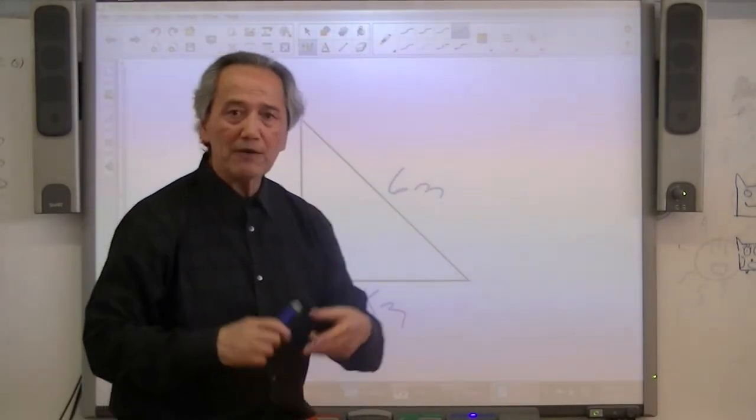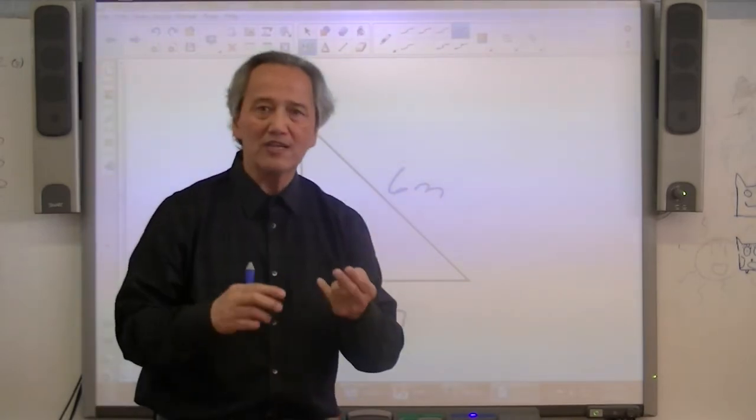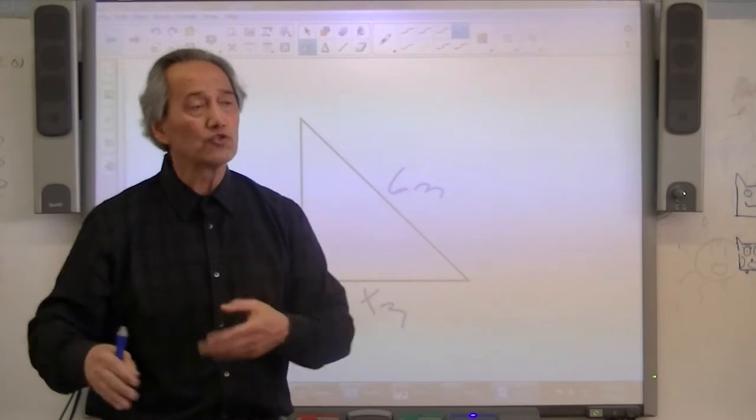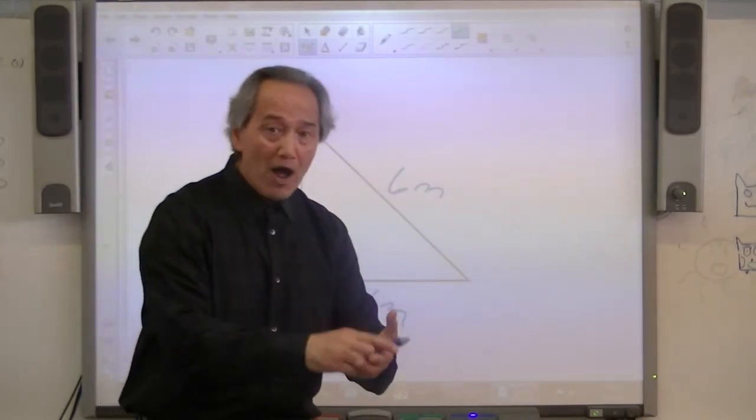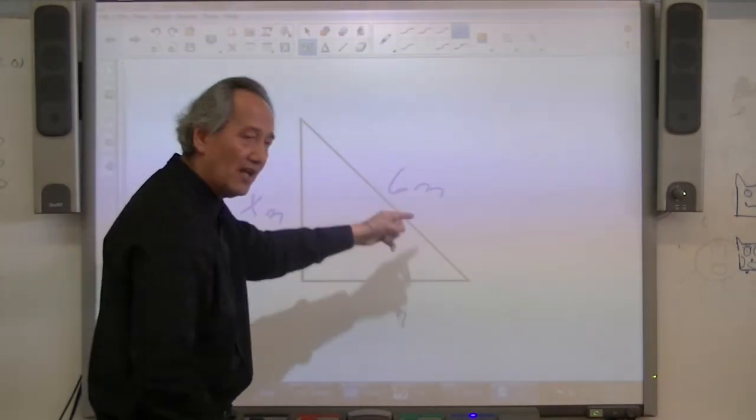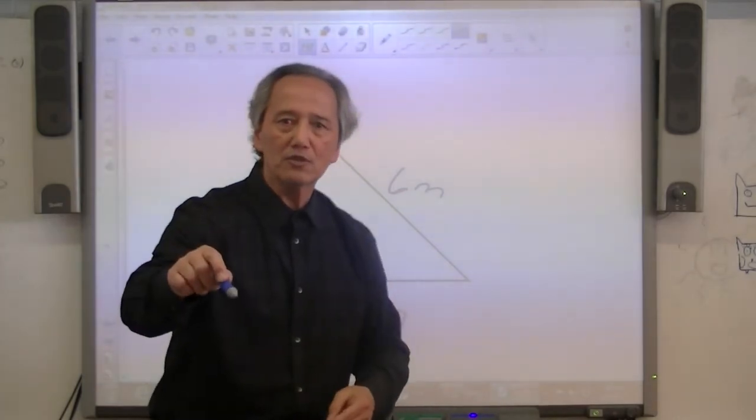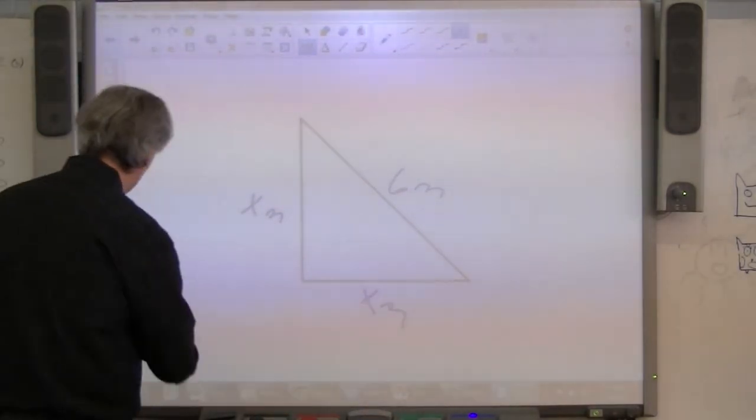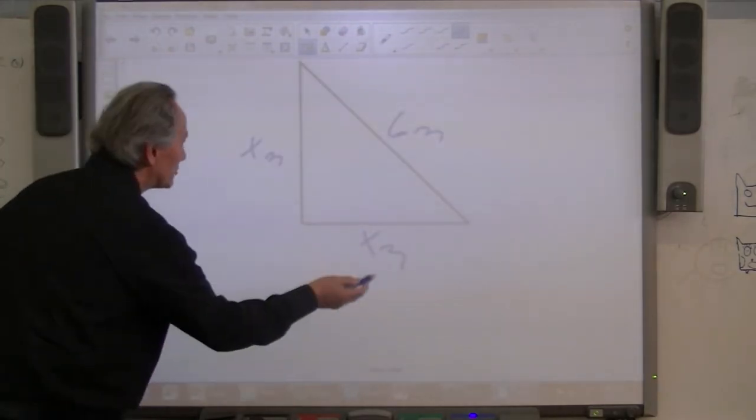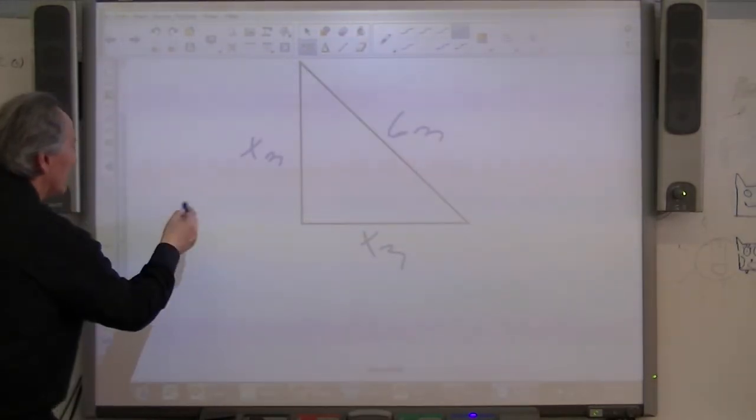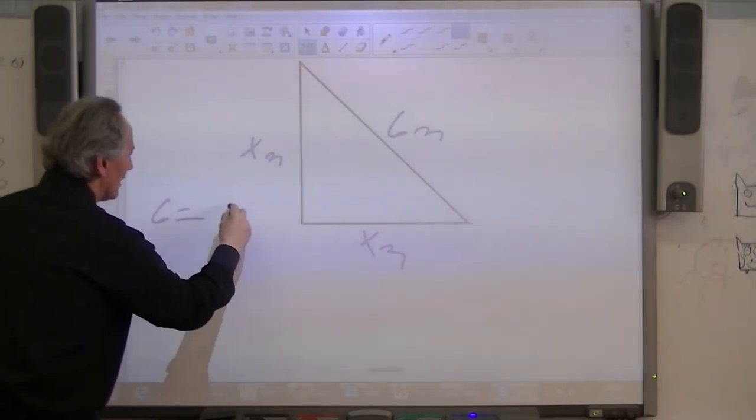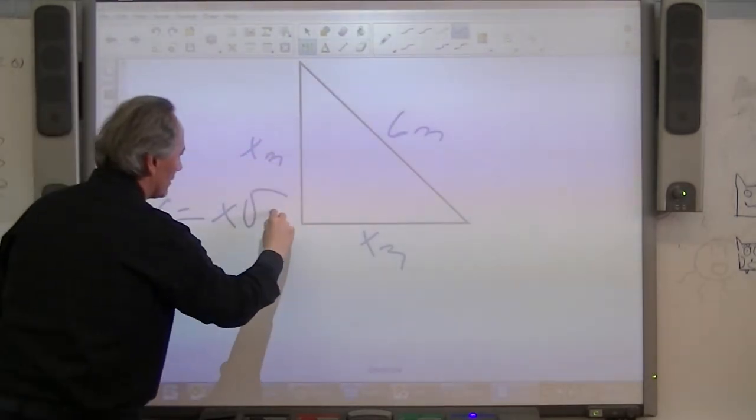What we're going to do is utilize the special relationship between the legs and the hypotenuse, which states that the hypotenuse, in this case 6, is equal to the square root of 2 times X, the leg. So let's put this in a quantitative value. The hypotenuse of 6 is equal to X, the side, times the square root of 2.